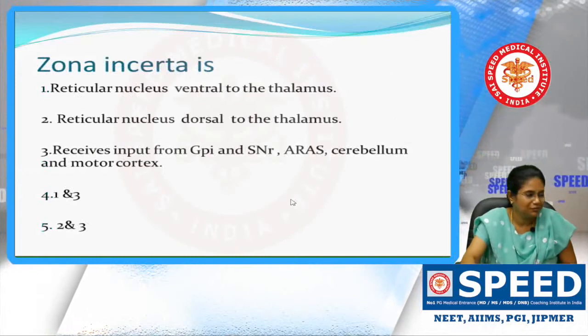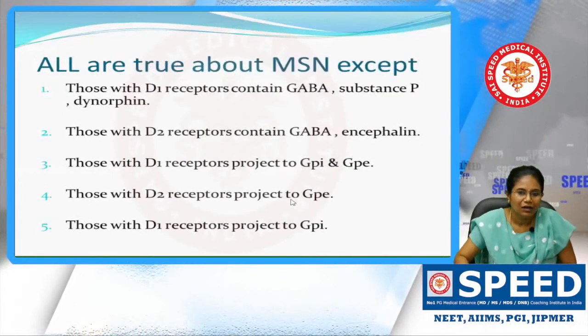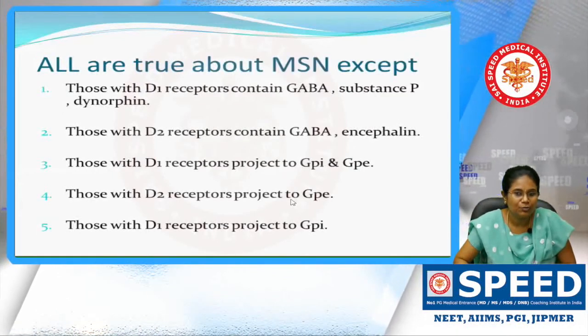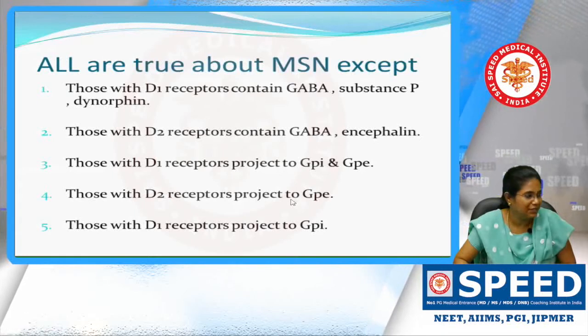And D2 receptors? D2 receptors contain GABA and enkephalin and they project to GPi.